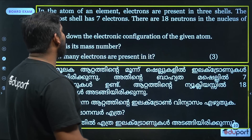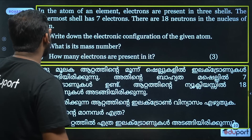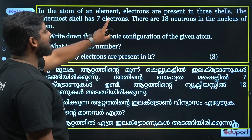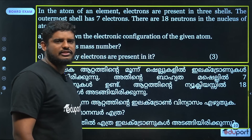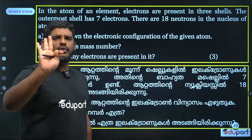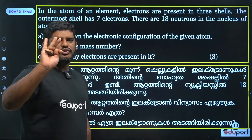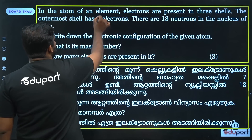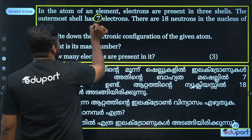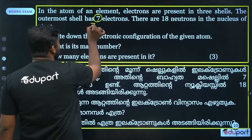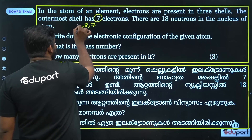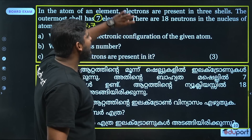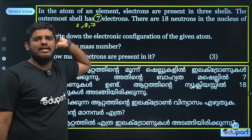This atom of an element has electrons present in three shells. The outermost shell contains seven electrons. The shells contain 2, 8, and 7 electrons. There are 18 neutrons.